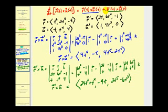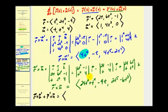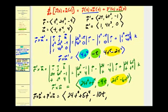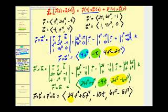Now we find the sum of these two cross products by adding corresponding components. The x components give twenty-four t squared plus five t to the fourth. The y components give negative t plus negative nine t, which is negative ten t. Combining the z components gives six t to the fifth minus eight t to the third. This is the right side of the equation.